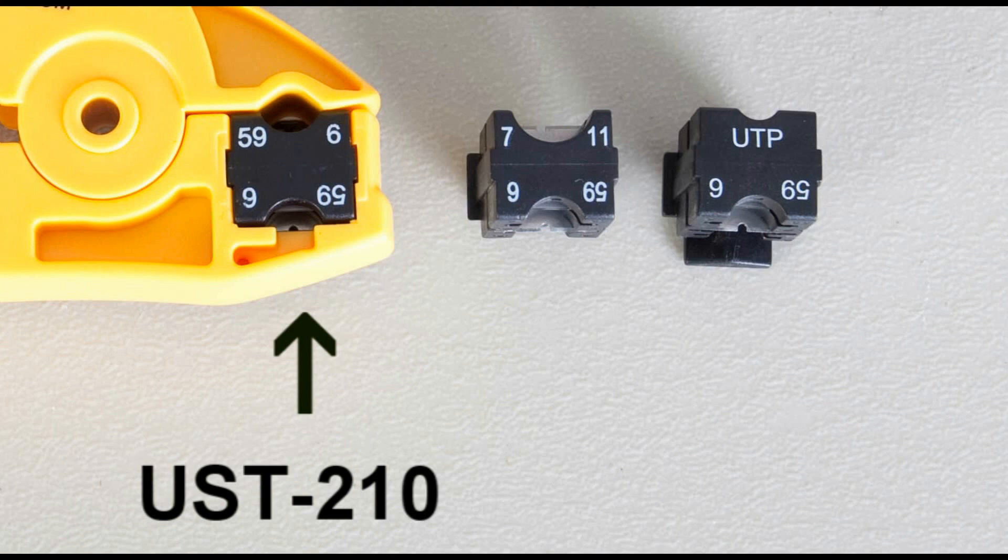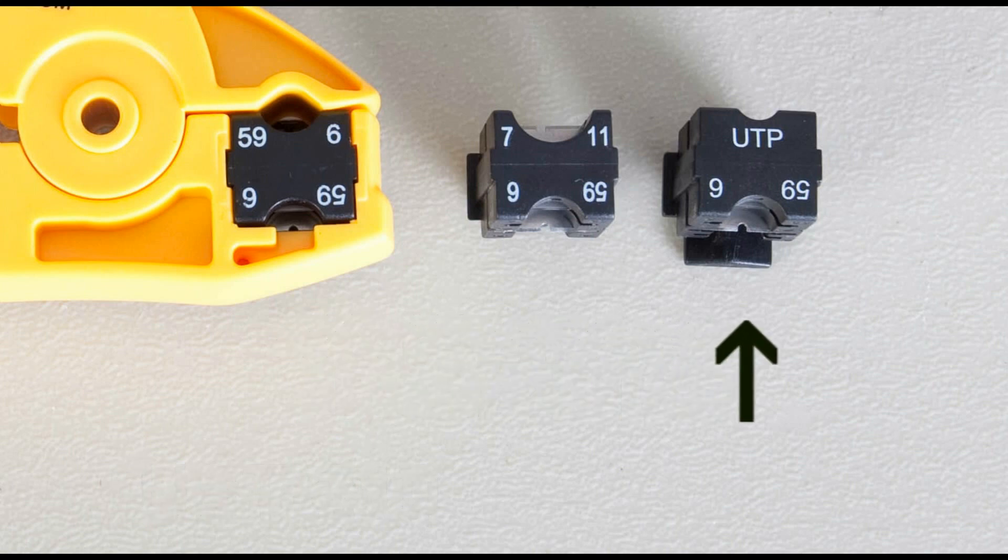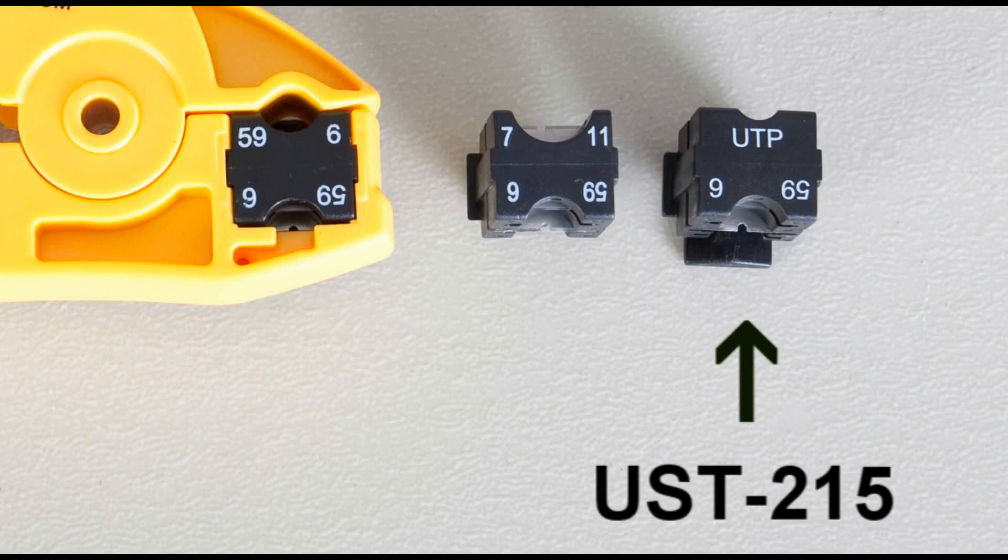The UST150 model uses the UST215 cartridge for stripping RG59, RG6, CAT5, CAT6, and other UTP cables.